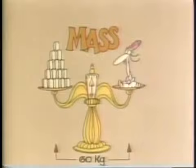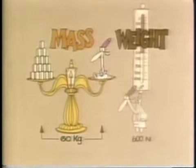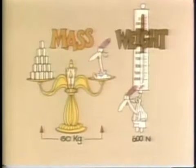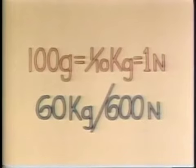In physics, kilograms measure your mass on a balance, but your weight is always measured in newtons on a spring scale. You can usually work out the number of newtons by multiplying the kilograms by 10. 100 grams, or one-tenth of a kilogram, is about the same as one newton, and 60 kilograms are about the same as 600 newtons.